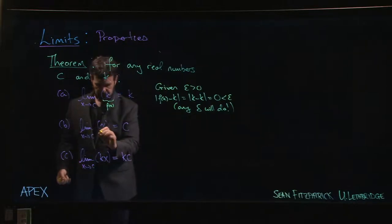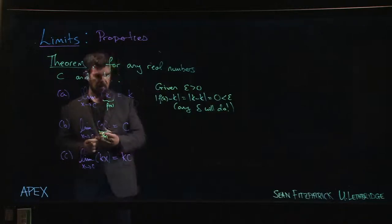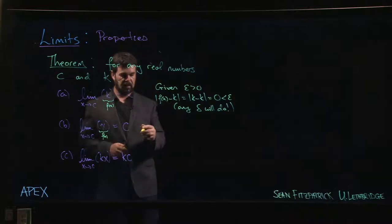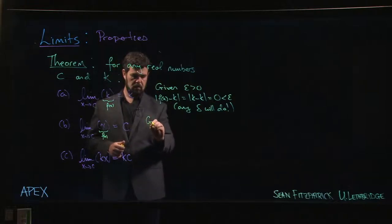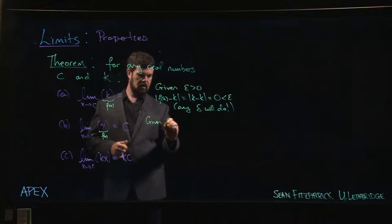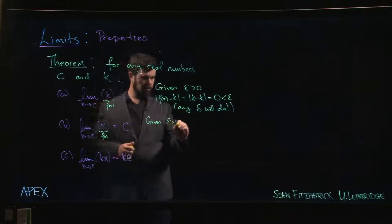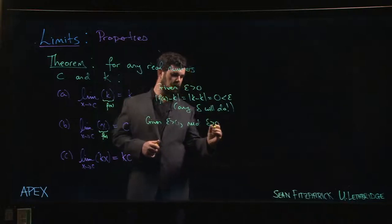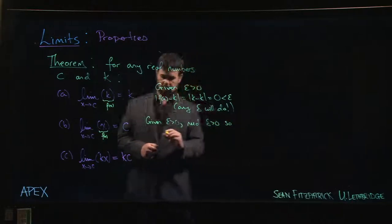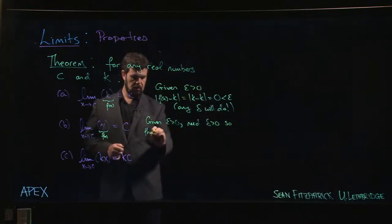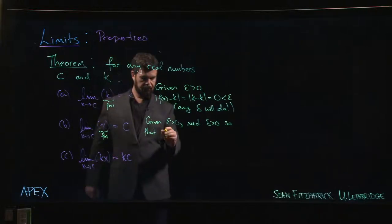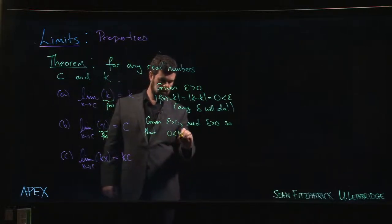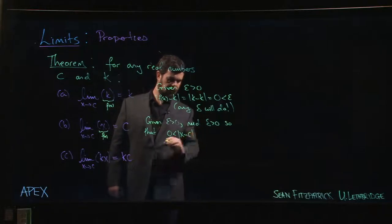We say, how are we going to make this one work? Well, given epsilon greater than zero, what do we need? We need a delta, and what do we need? Well, we need to know that if x minus c is less than delta in absolute value...